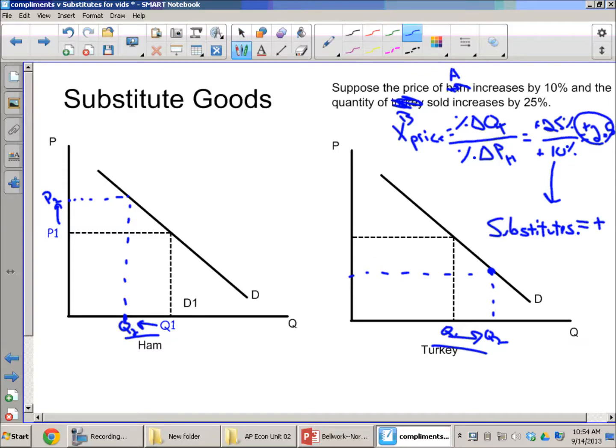And so again, why are substitutes always positive, or why is the answer positive? Let's do the same thing we did before. So we started off with the price of A going up. So when the price of a good goes up, we know the quantity of that good sold goes down.